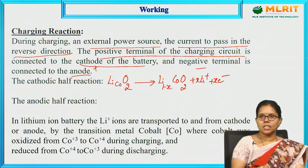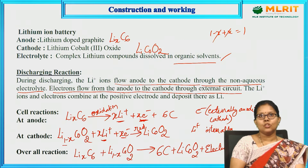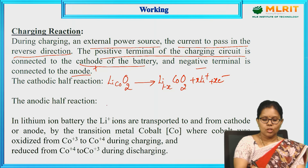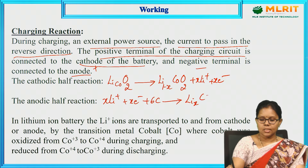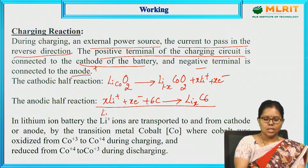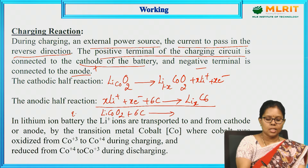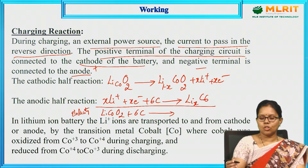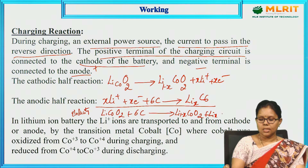The anodic half-reaction during charging is the reverse of the discharge anodic reaction: x Li⁺ + x e⁻ + 6C → LixC6. The overall charging reaction is: LiCoO2 + 6C → LixC6 + Li(1-x)CoO2. When we apply electricity to the discharged products, we get back our reactants and the battery is ready for use.